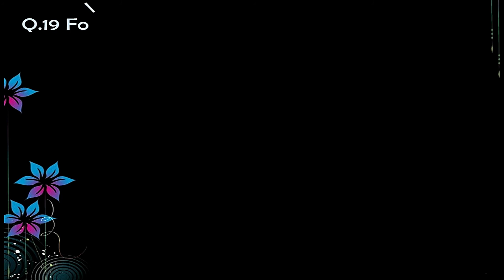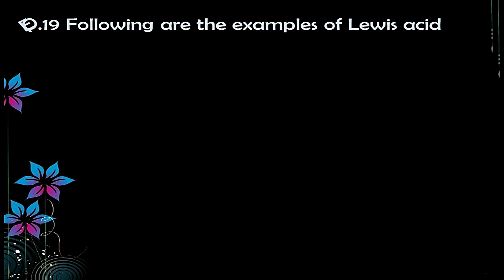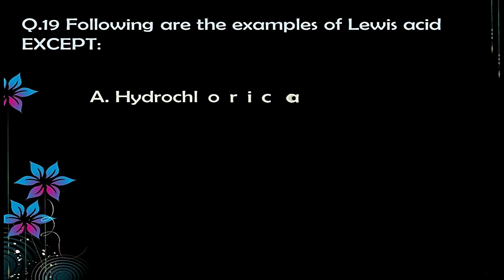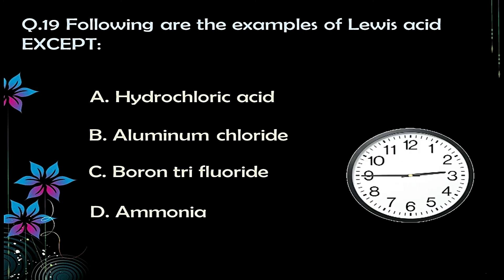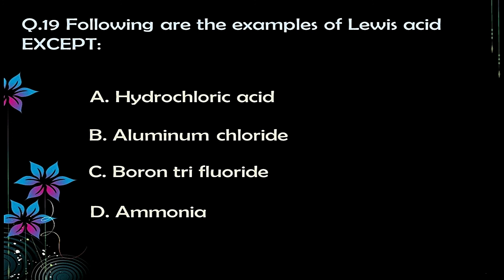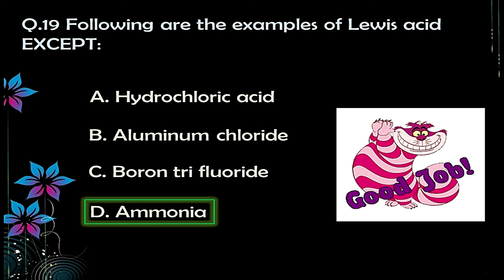Question number nineteen: which of the following is not an example of a Lewis acid? Options: A) HCl, B) AlCl₃, C) BCl₃, D) ammonia. The correct answer is option D — ammonia — because ammonia can easily donate a lone pair of electrons; its nitrogen atom is electron-rich with one lone pair, making it a Lewis base, not a Lewis acid.